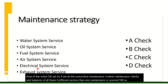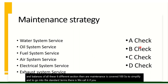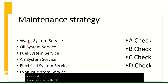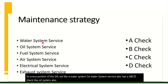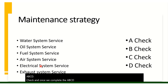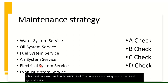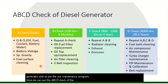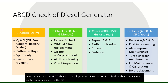To standardize these checks, we use what we call A Check, B Check, C Check, and D Check — shown on the right side. We will go into detail in subsequent modules. Each section of the DG set — water system, oil system, and so on — has its own A, B, C, D check. Once all A, B, C, D checks are completed, we have taken care of our diesel generator set as per the maintenance program. The A Check is the daily routine checkup of the DG set.